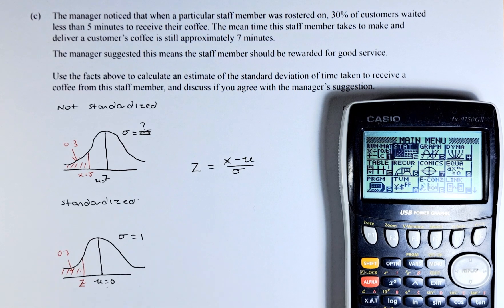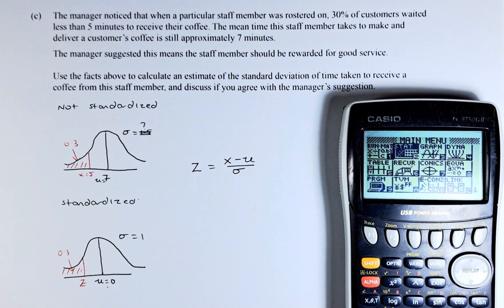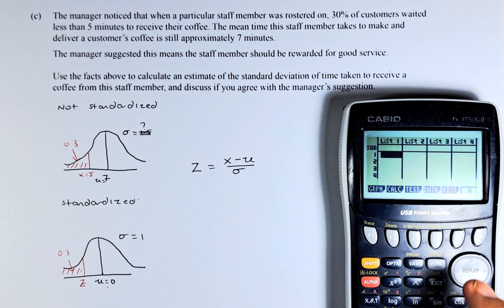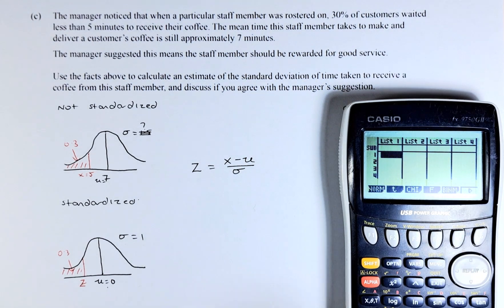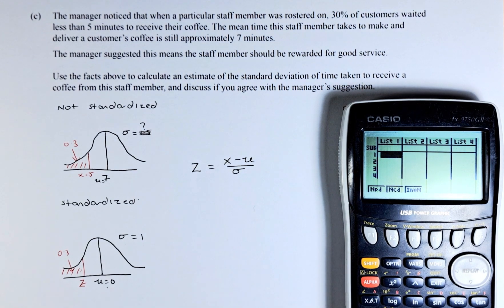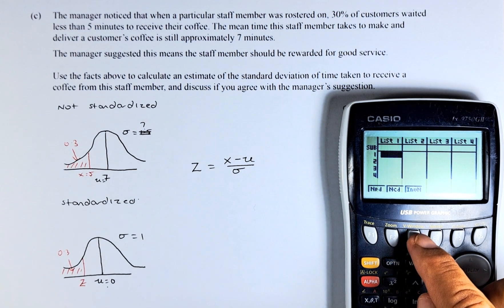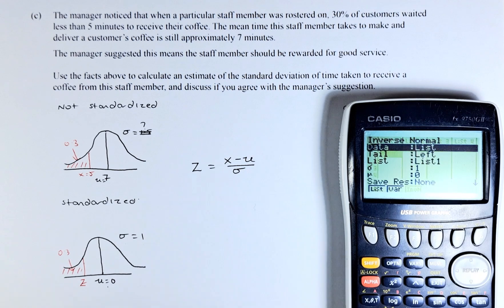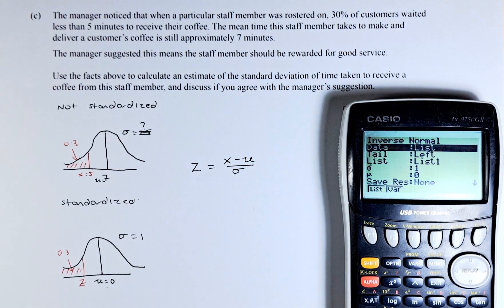So again, we are going to use the graphic calculator to help us solve this problem. Go to statistics as usual. Go to distribution F5 and then normal F1. Now, remember we are doing inverse normal. So we have to put F3 instead of F2 this time. So F3 will give us the inverse normal distribution screen.